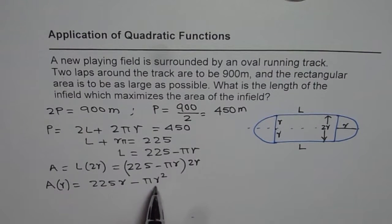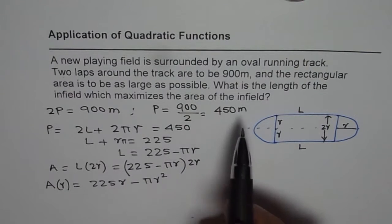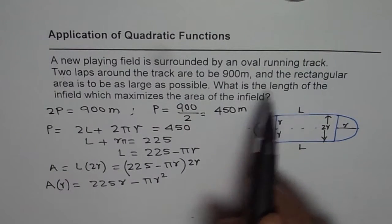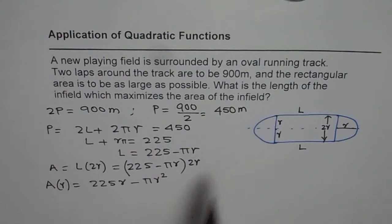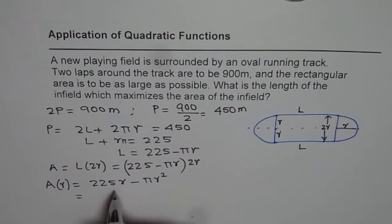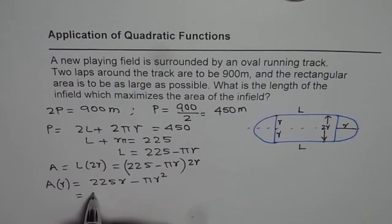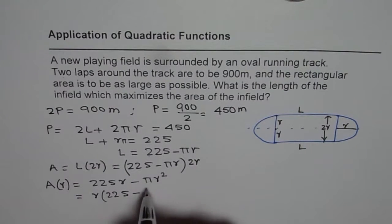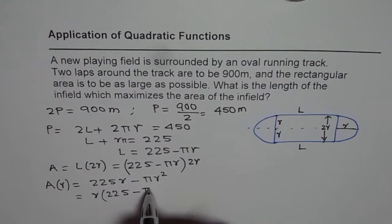So we could now solve it using completing the squares or we can, so we need to find the dimensions. What is the length of the infield which maximizes the area of the infield? So we need to find the dimensions. So what we can also do is we can factor and solve it. So both ways we can do. So let us take R as a common factor. So what do we get?